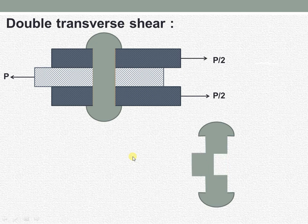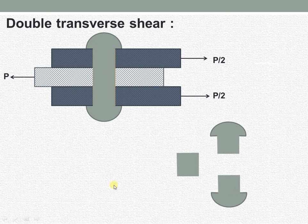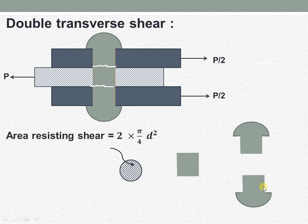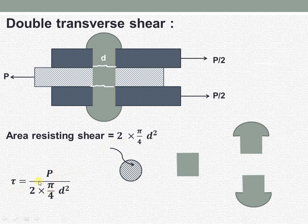If this load exceeds a certain design value, the rivet will fail at two places — at the junctions of the plates. The area resisting shear remains π/4 D², but since shear is taking place at two places, we multiply by 2. So the shear stress equals the tangential force P divided by 2 times π/4 D². This is the concept of double shear in machine design.